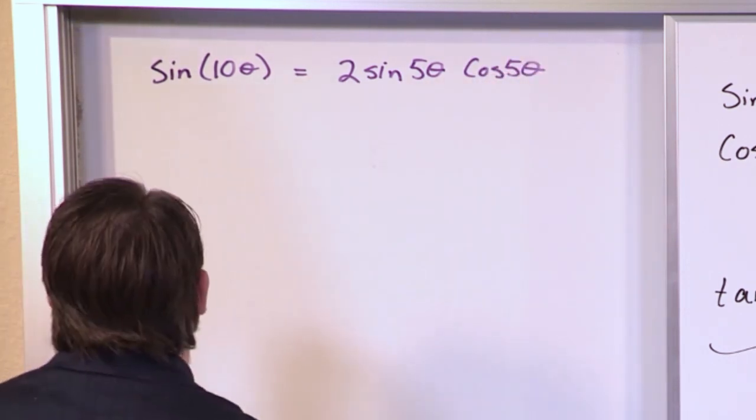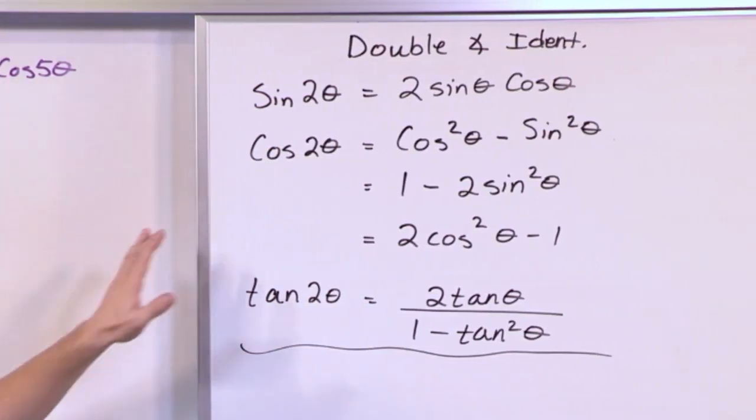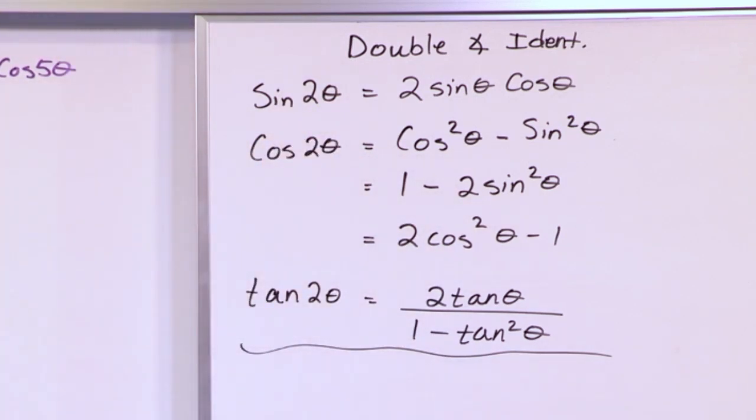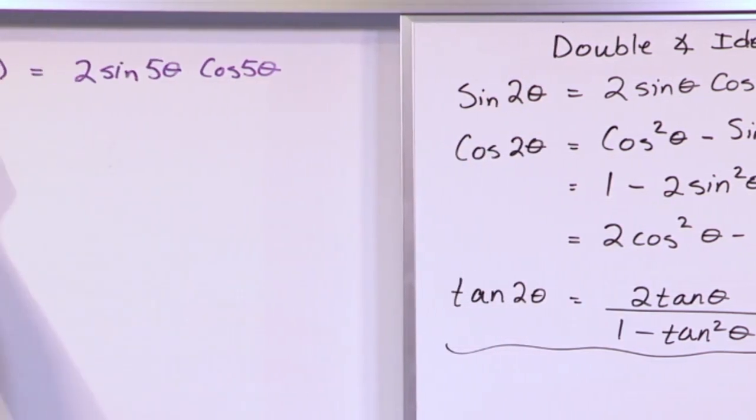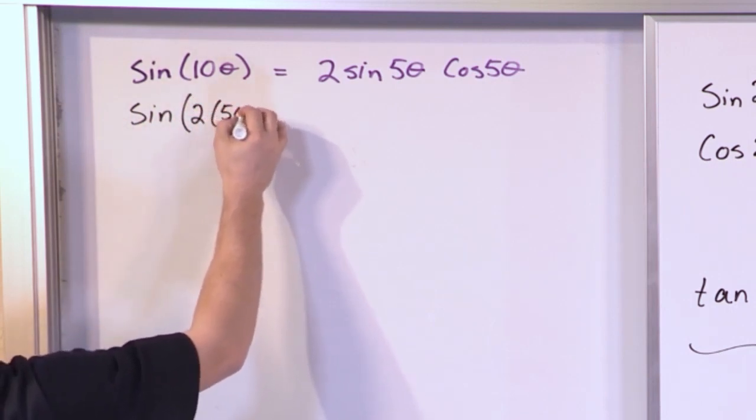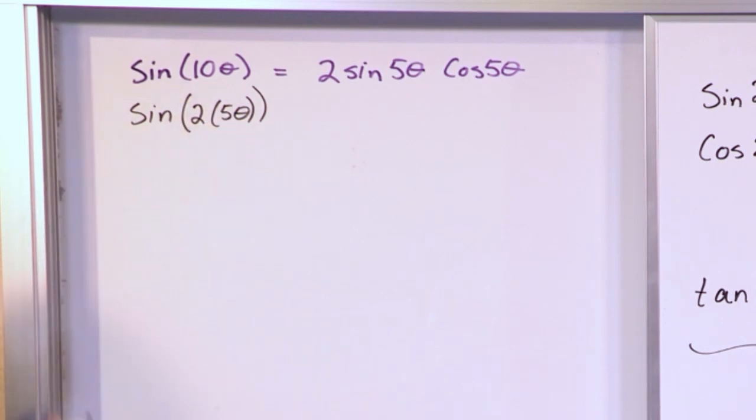Well, the first thing we notice is that we have sine of 10 theta, but the double angle only applies if you have sine of 2 times an angle. So you need to rewrite this to fit that situation. So we have sine of 2 times 5 theta. This is the double angle. The angle is 5 theta. You're doubling it like this. You have to make it fit that form.